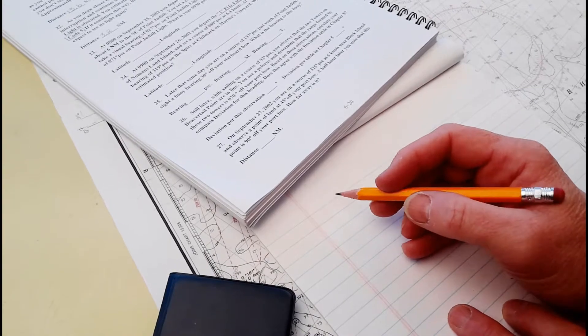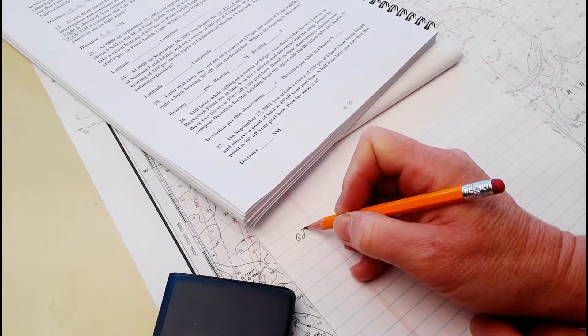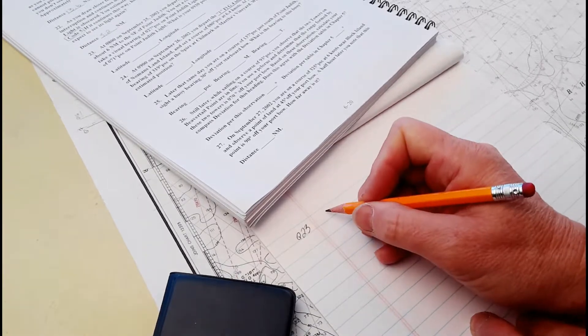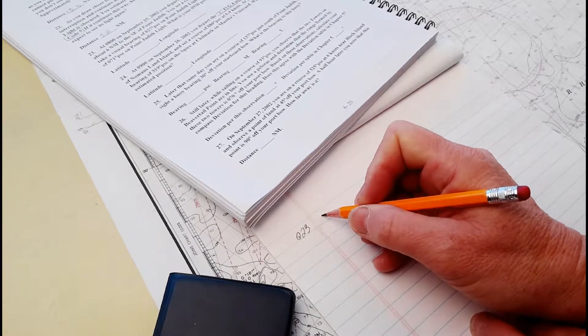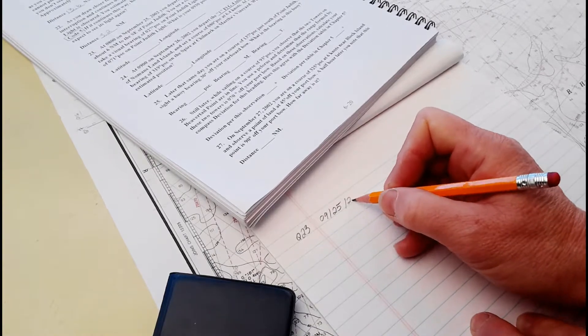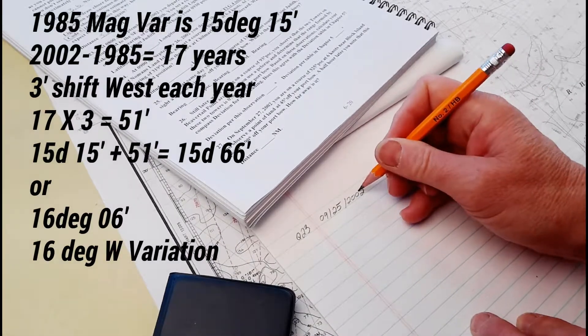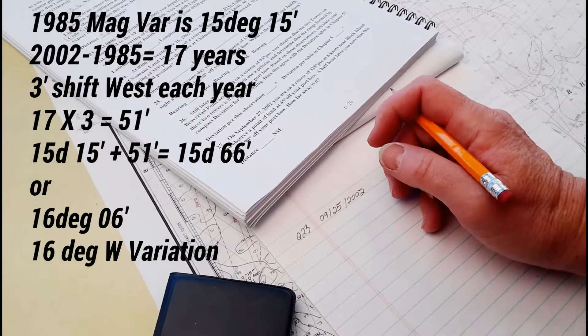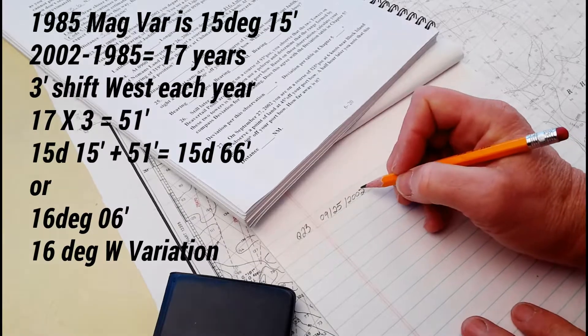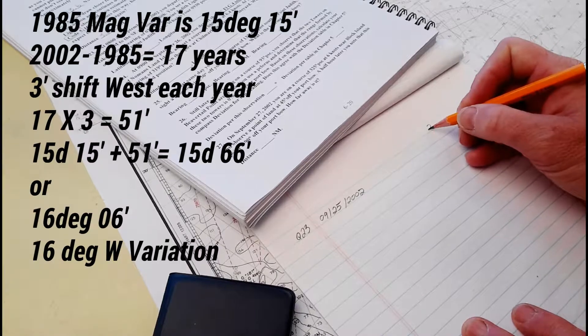Some key things I put in right away: the question number Q23. I also put in the date, September 25th, 2002. Previously we've already checked the chart and the compass rose and found that at 2002 there was a 16 degree west variation.